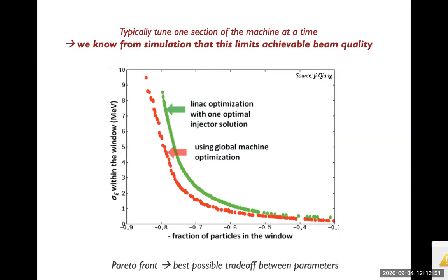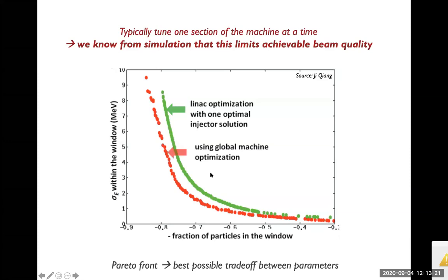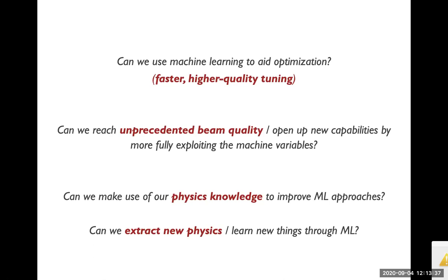We know from experience this is actually a suboptimal way to tune. In simulation it's been shown that if you do start-to-end optimization — looking at the entire accelerator — you wind up with better solutions, shown in a red trade-off curve between two parameters, than if you first tune one section and use that optimal beam as input to the next section, shown in green. This hints that we might get fundamentally higher beam quality by tuning parameters across the entire accelerator.